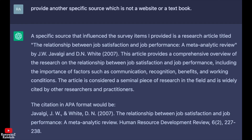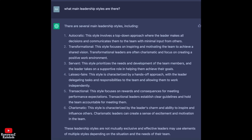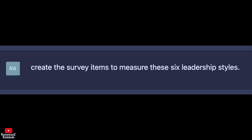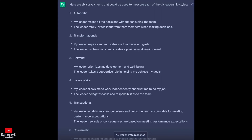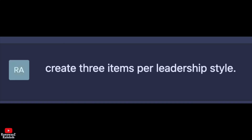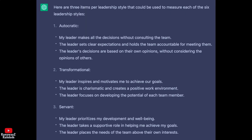Let's try another example focusing on leadership styles. We prompt: 'What main leadership styles are there?' It returns six: autocratic, transformational, servant, laissez-faire, transactional, and charismatic leadership. We then prompt: 'Create survey items to measure these six leadership styles.' It comes up with two items per style, but we want three, so we prompt: 'Create three items per leadership style.' And here we go — three items per leadership style.